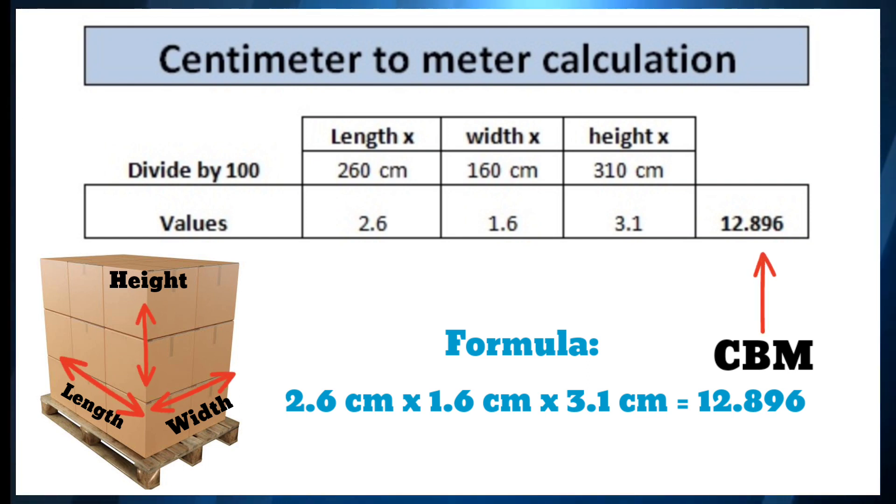To convert centimeters into meters, we just have to divide each value by 100. Suppose cargo boxes' length is 260 centimeters, width is 160 centimeters, and height is 310 centimeters. After dividing each value by 100 and multiplying 2.6 by 1.6 by 3.1, we get the CBM.